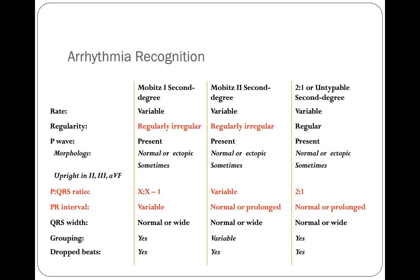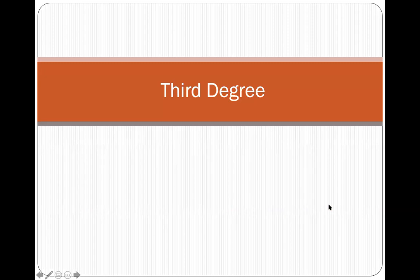Comparing the second degree types: both Wenckebach and Mobitz II are regularly irregular. The P-to-QRS ratio is variable based on how many P-waves are blocked. The PR interval in Wenckebach is variable; in Mobitz II it is either normal or prolonged but consistent. In a two-to-one untypeable block, PR intervals are also consistent, but additional work is needed to determine whether it's type one or type two.